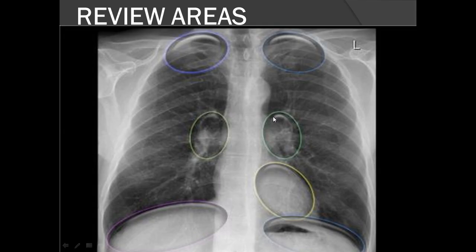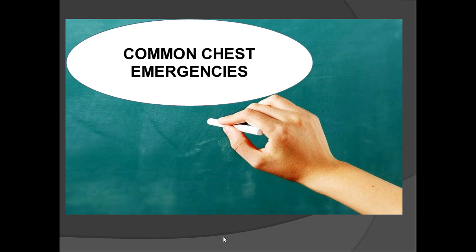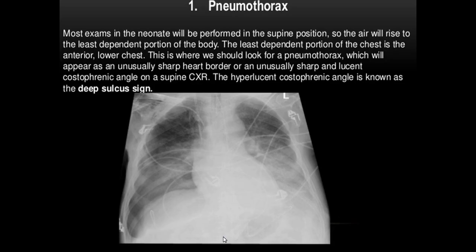The air within the soft tissue planes represents subcutaneous emphysema. These are the key review areas: the apices, the hila, the retrocardiac region — where hidden pathology such as a mediastinal mass or left lower lobe collapse may lurk — and below the diaphragm.